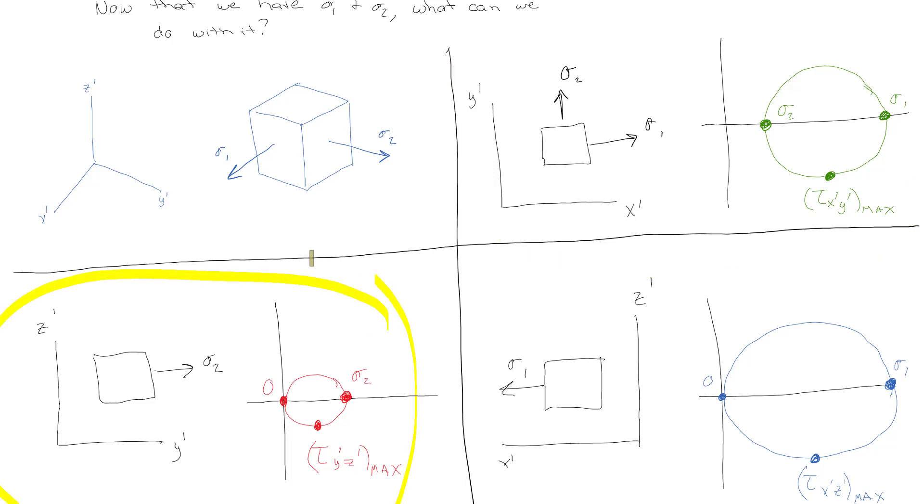Now over here what we have is what it would look like in the z y axis and so you would only see this sigma 2 and the shear stress would be a different value on that face and then if we're going to max it out. And then the same thing here is if we were looking on the x z plane, again all of those values are going to be slightly different.